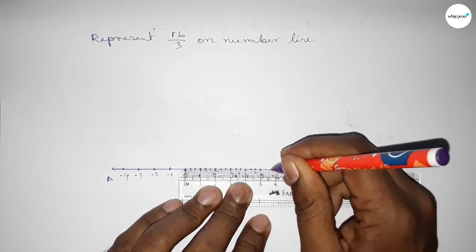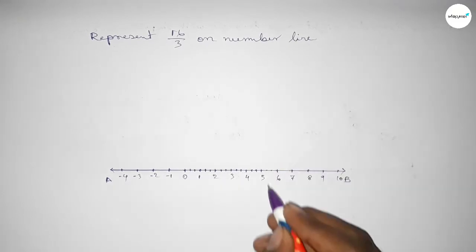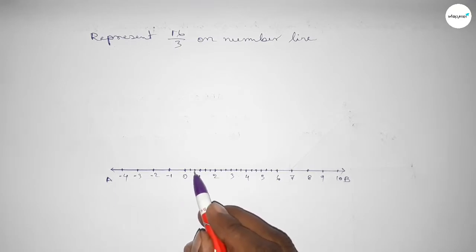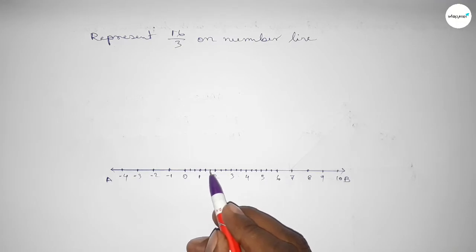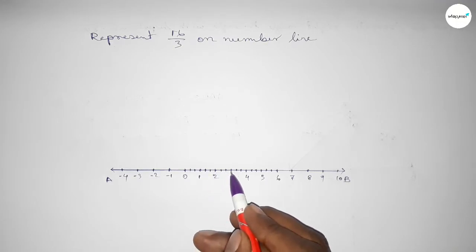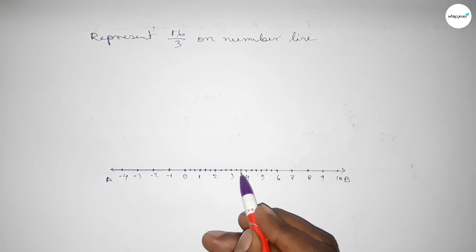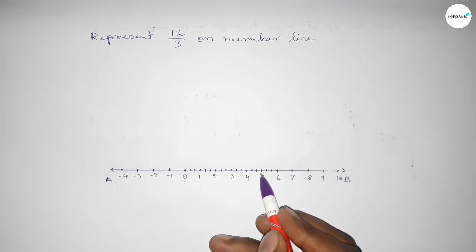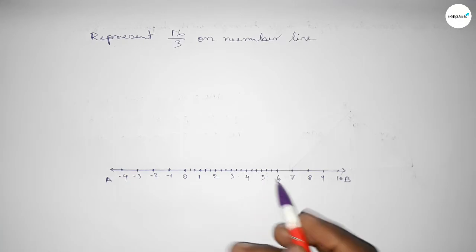This is 0.6 something approximately. Marking the numbers: this is 1 over 3, 2 over 3, 3 over 3, 4 over 3, 5 over 3, 6 over 3, 7 over 3, 8 over 3, 9 over 3, 10 over 3, 11 over 3, 12 over 3, 13 over 3, 14 over 3, 15 over 3.